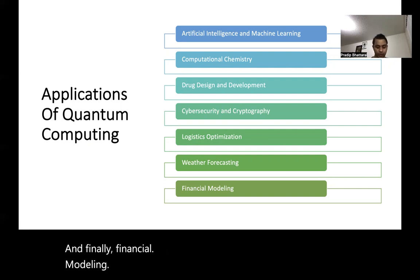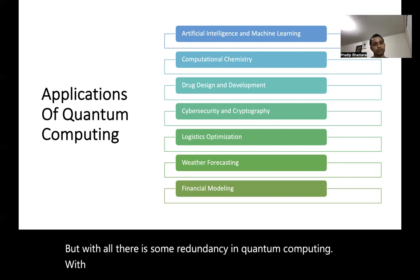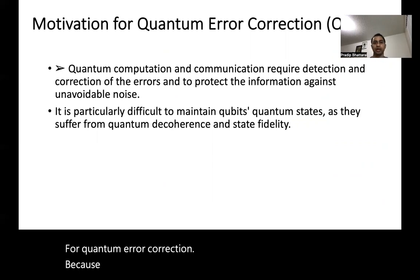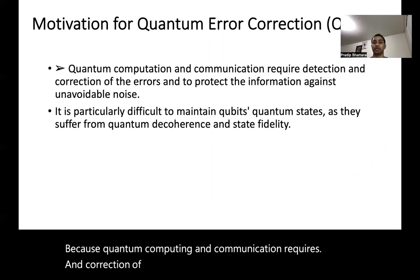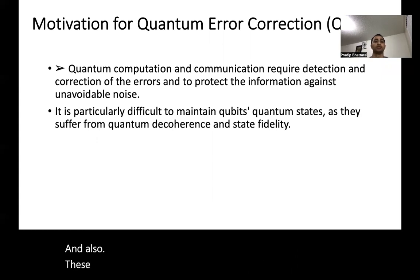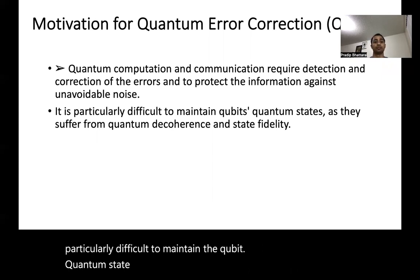With all these applications there is some redundancy in quantum computing. That complication motivates quantum error correction, because quantum computing and communication requires detection and correction of errors to protect information against unavoidable noise. It is particularly difficult to maintain the qubit quantum state as qubits suffer from quantum decoherence and loss of state fidelity.